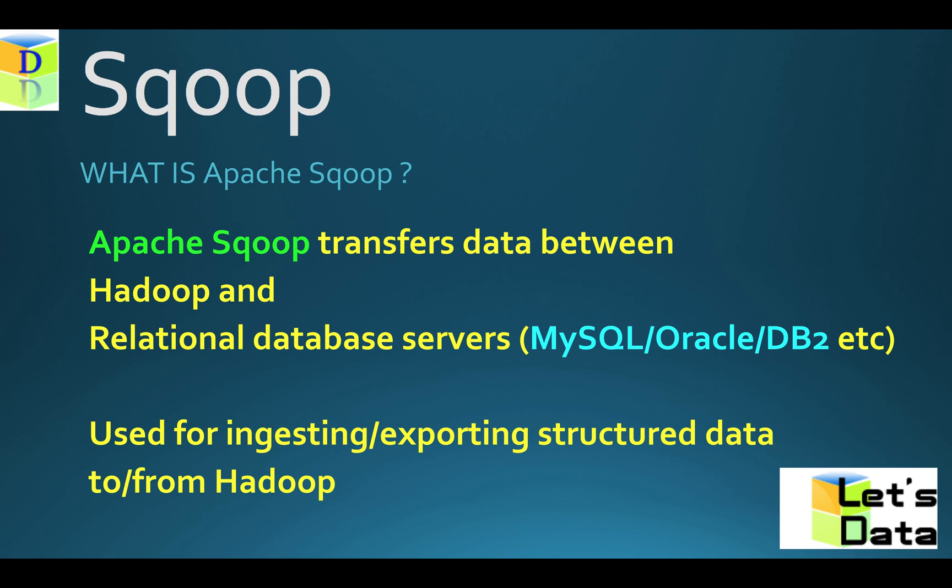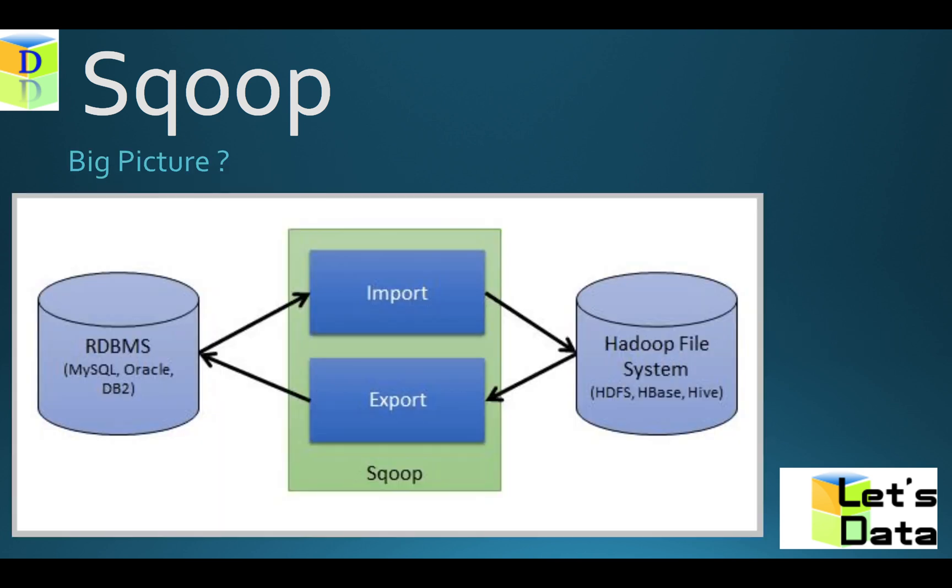Sqoop is basically a two-way tool — that is, we can use it for ingestion and exporting structured data from and to Hadoop. This is one of the key features: it is used only for structured data.